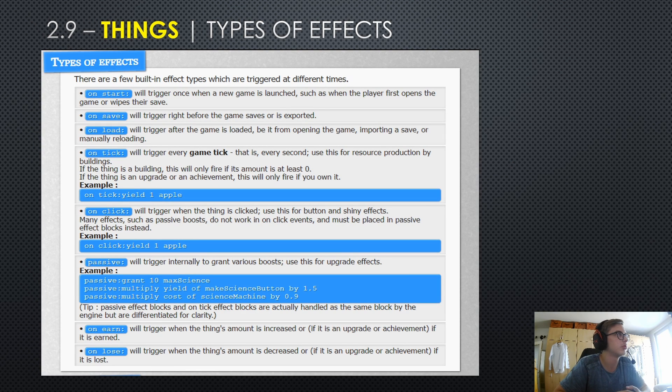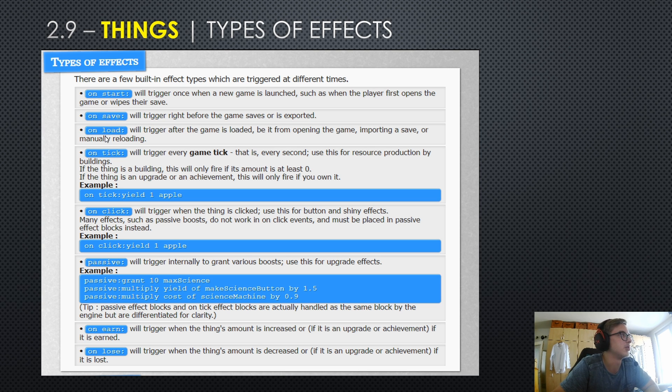Let's now move on to types of effects. There are a few built-in effect types, which are triggered at different times. And they are all listed in here. We have the on start effect. This will trigger once, when a new game is launched, such as when the player first opens the game or wipes their save. This can be pretty useful when, for example, you want to add a tutorial to your game.